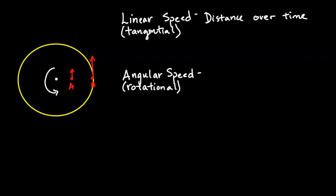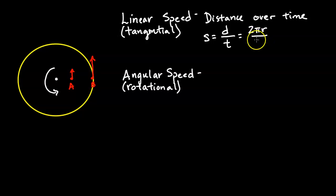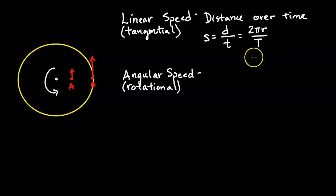To calculate linear speed, we take the total distance traveled divided by time. Because the distance traveled traces a circle, we can say it's 2πr divided by the period T, where the period is the time for one complete circle. This allows you to calculate the linear speed. The farther you are from the axis of rotation, the greater your linear speed.